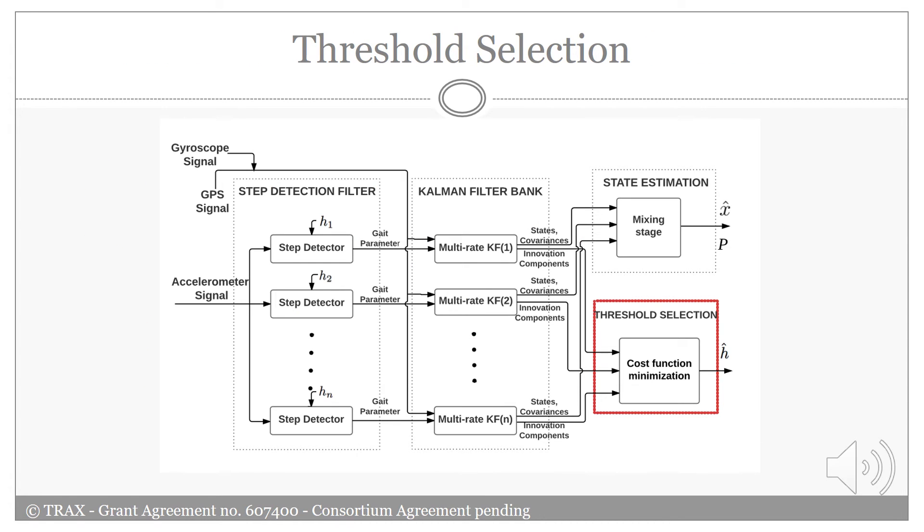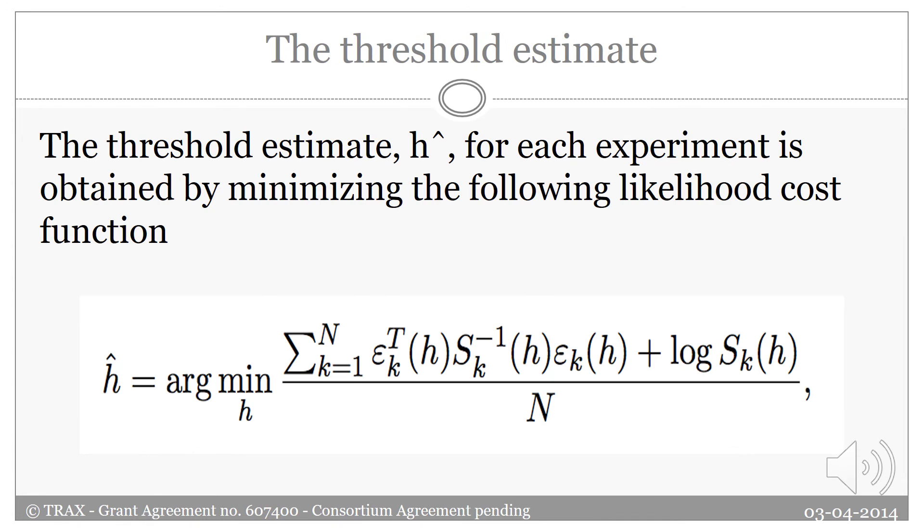Now it's time to introduce the threshold selection section. In the threshold selection section, the threshold is estimated. For each experiment, the threshold is estimated by minimizing the likelihood cost function that is represented here.